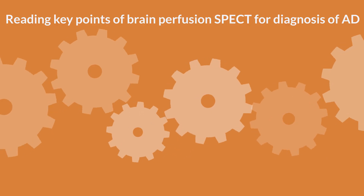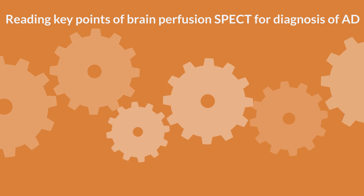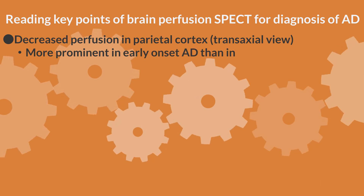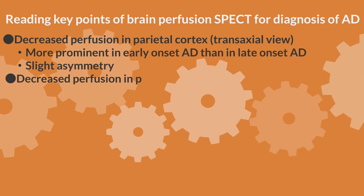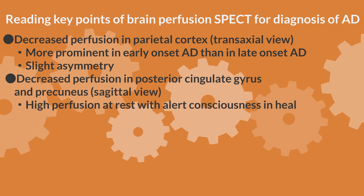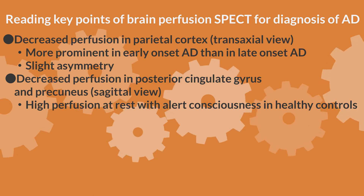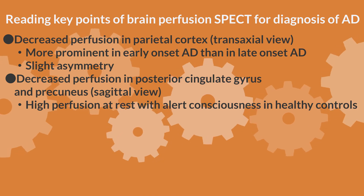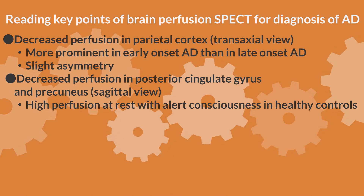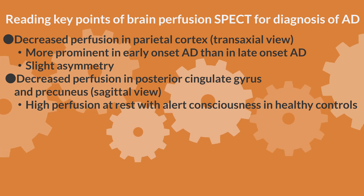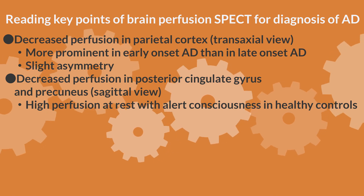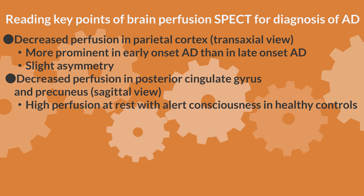The following is an explanation of the key points of brain perfusion SPECT reading in Alzheimer's disease. First, transaxial images should be taken to determine if there is a decrease in perfusion in the parietal lobe. This is more pronounced in early onset cases than in late onset cases, and mild left-right differences can be seen. Next, look for decreased perfusion in the posterior cingulate gyrus and precuneus, determined by sagittal sections. Since perfusion in this region is high when the patient is awake and resting, it is difficult to determine a mild decrease by visual evaluation; statistical image analysis methods can be helpful.